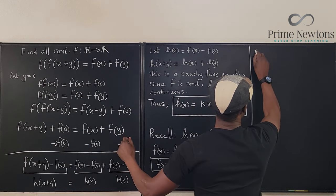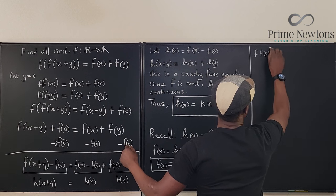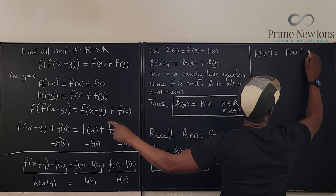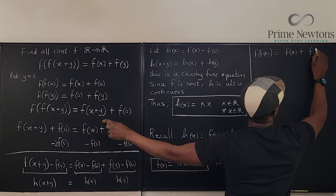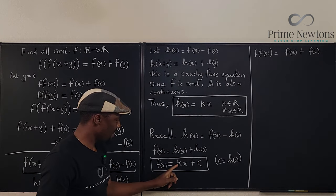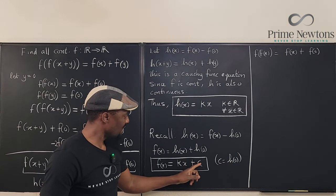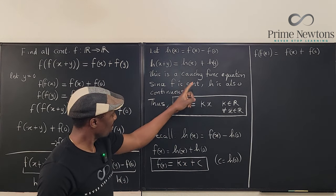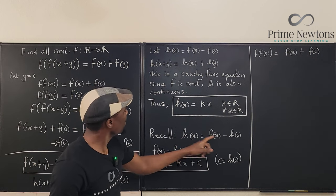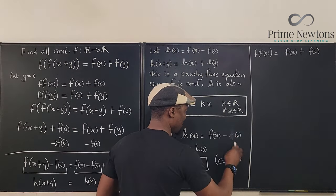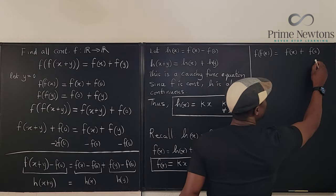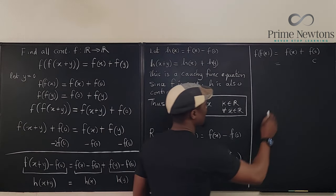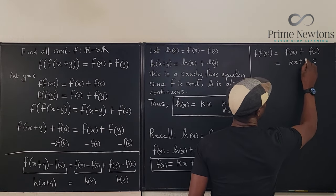So, we have f of f of x is equal to f of x plus f of 0. So, in our case, f of x is kx plus c and f of 0 is, hey, this was not correct. Recall f of, not h, it's f of 0. Come on. So, this is our f of 0. This is going to be c. And this is going to be the solution that we have, which is kx plus c. This is kx plus c.